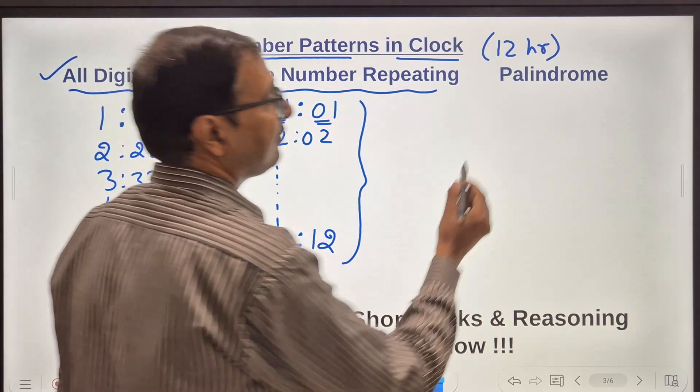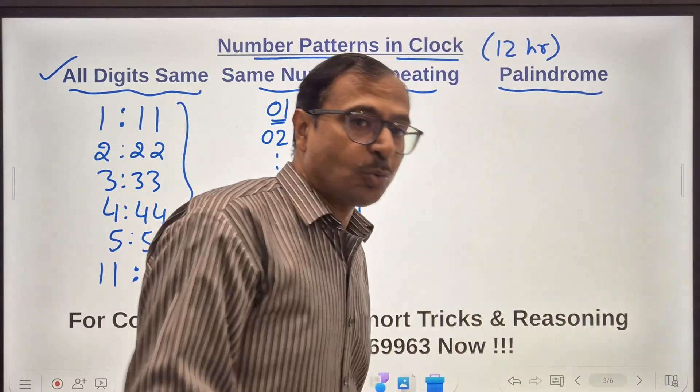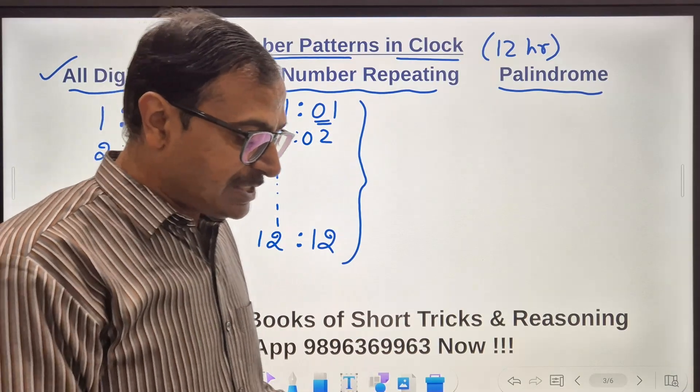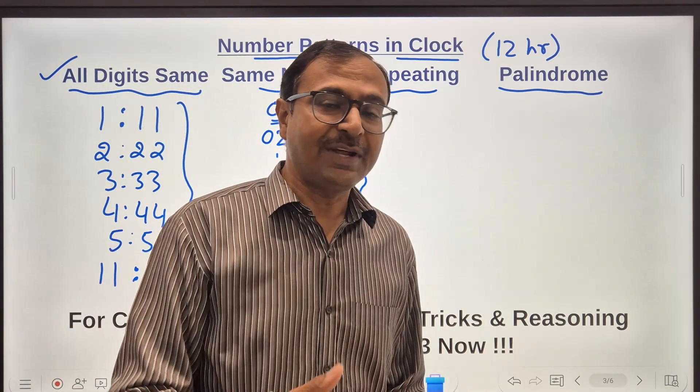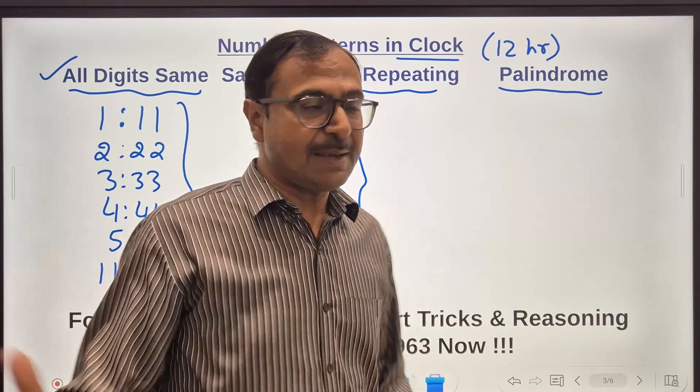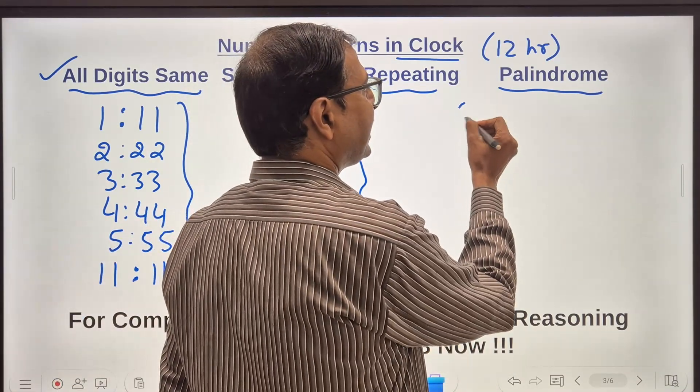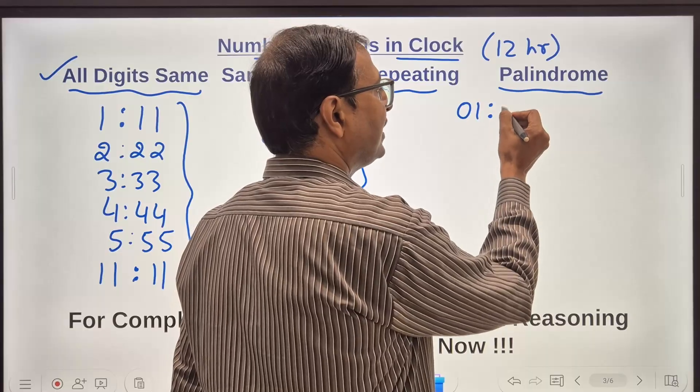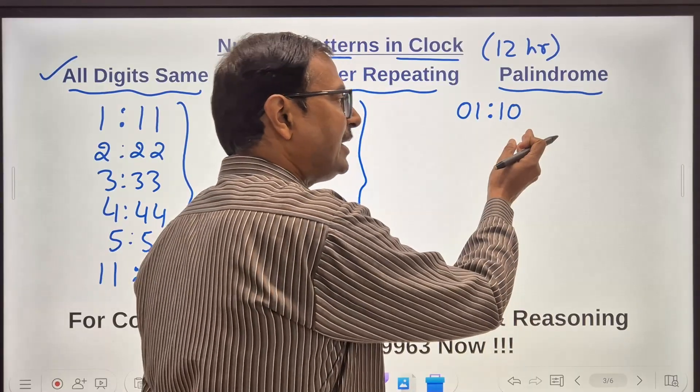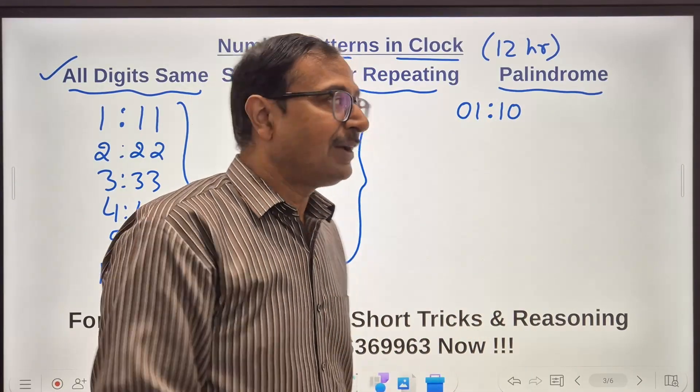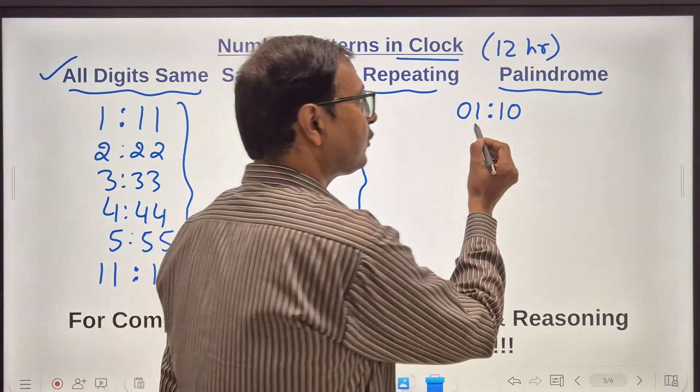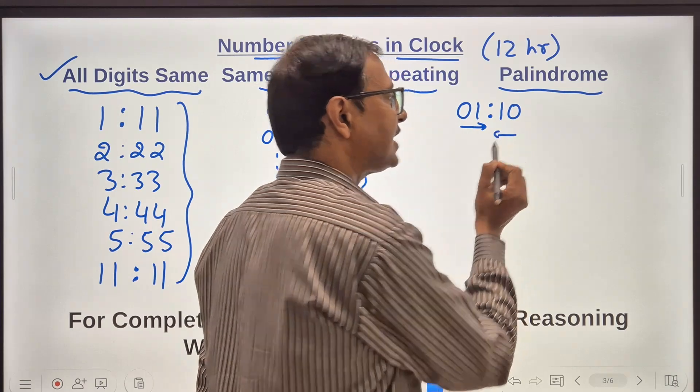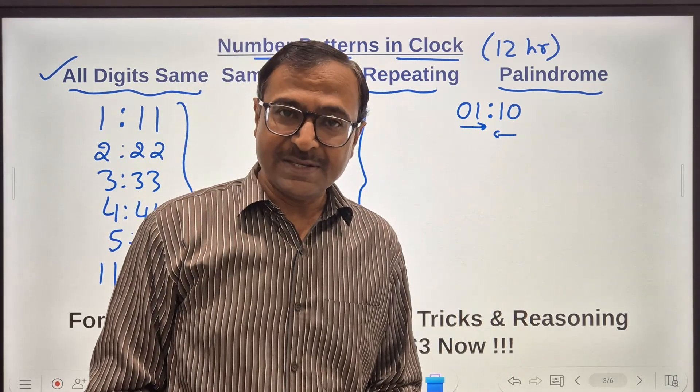Likewise you have some times which are palindromic in nature. Palindromic means when you read it from the left to right or you read it from the right to left it will look like the same. Like you have a palindromic time like 01:10. So 10 minutes past 1 pm, read it from this side and read it from this side you will see that the time is same.